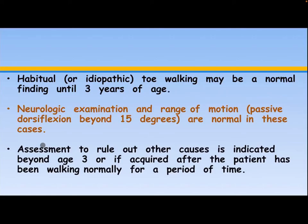Habitual or idiopathic toe walking may be a normal finding until three years of age. Neurological examination and range of motion — passive dorsiflexion beyond 15 degrees — are normally intact in these cases. Assessment to rule out other causes is indicated beyond age three or if the toe walking is acquired after the patient has been walking normally for a period of time.